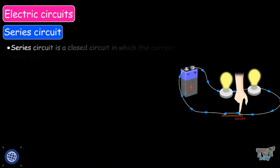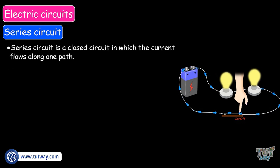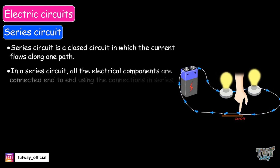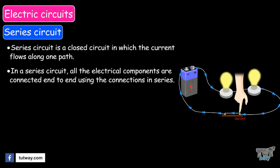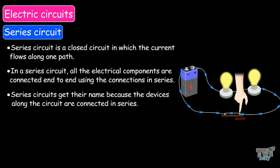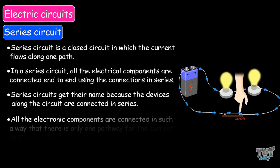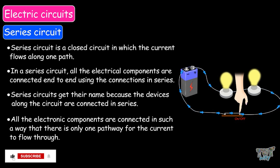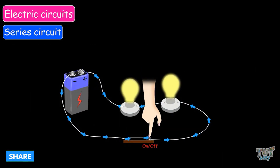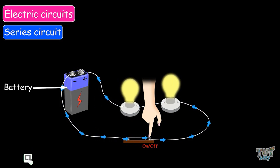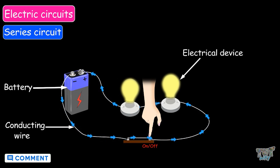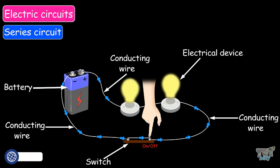A series circuit is a closed circuit in which the current flows along one path. In a series circuit, all the electrical components are connected end-to-end using connections in series. Series circuits get their name because the devices along the circuit are connected in series. All the electronic components are connected so that there is only one pathway for the current to flow through, forming a complete closed loop from the battery through the connecting wire to the electronic device and back.